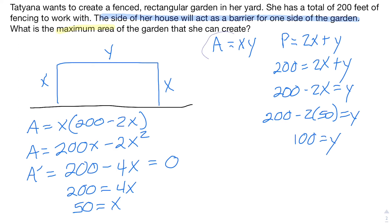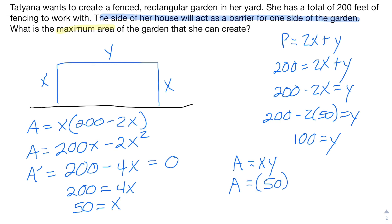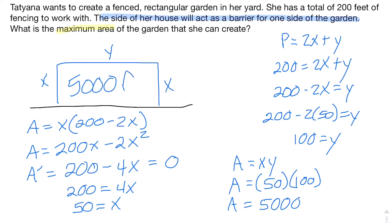Now that we have x equals 50 and y equals 100, the maximum area is 50 times 100, which equals 5000 square feet — twice as large as the first example. That makes logical sense: if you don't have to use fencing along the house, you can expand your other dimensions and end up with a larger space. If you have any questions on optimization, we'll look at more examples in other videos. Thanks for watching.